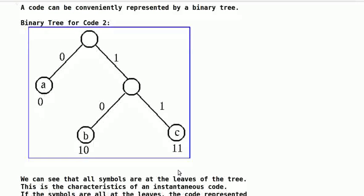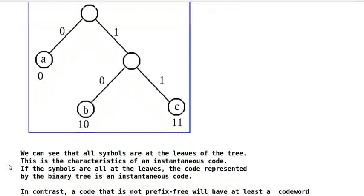Alternatively, a left branch can signify a 1 and a right branch can signify a 0. We can see that all symbols are on the leaves of the tree. This is the characteristic of an instantaneous code. If the symbols are all on the leaves, the code represented by the binary tree is an instantaneous code.